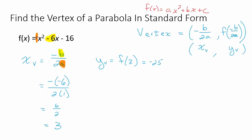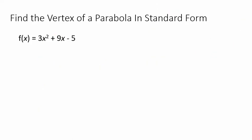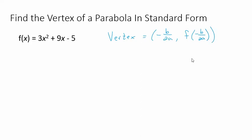Let's try a different problem. Pause the video and find the vertex of this parabola using the formula we just developed. The x-value is negative b over 2a, and then plug that value into the function to find the y-value. Start the video back up once you find it.